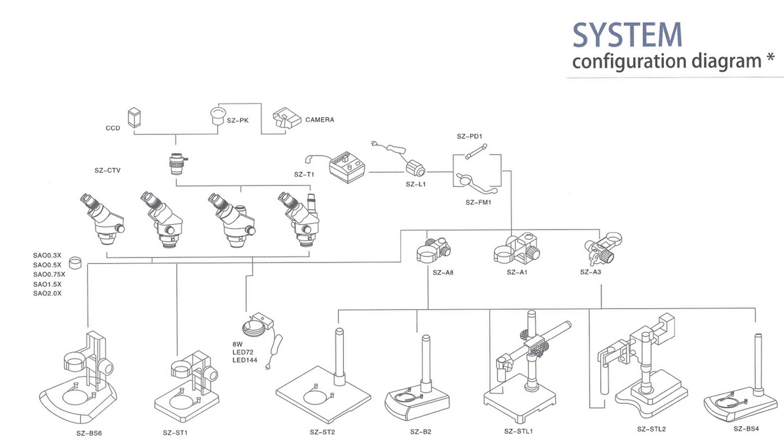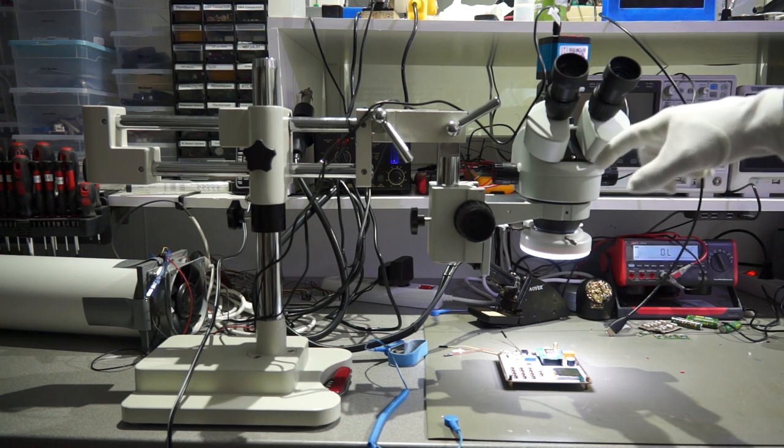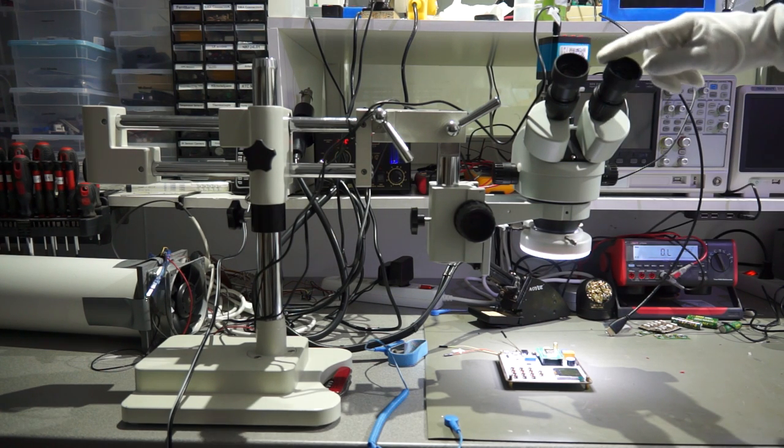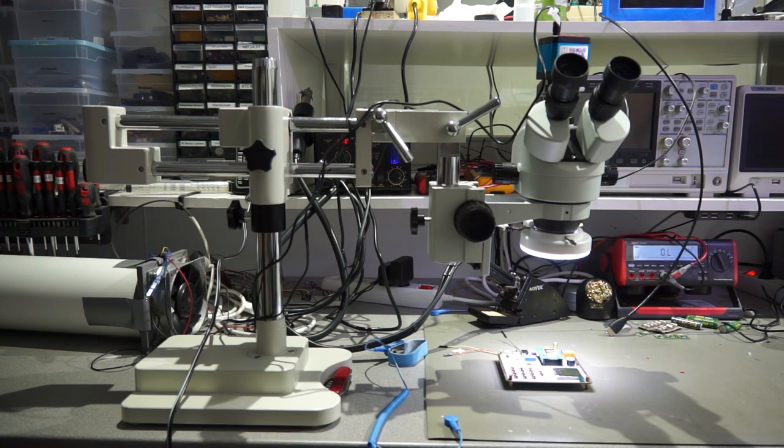To understand your choices, it's best to start with the different parts of a binocular microscope. Its heart is the viewing head with the optics. You can choose between binocular heads and trinocular heads, which offer an additional attachment for a camera. The head has a basic magnification factor, which is part of the overall magnification factor of the microscope.